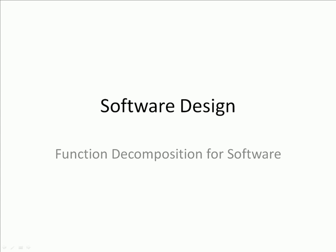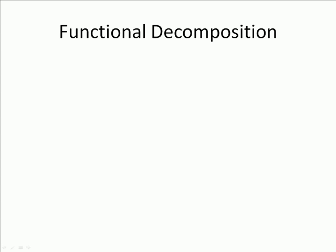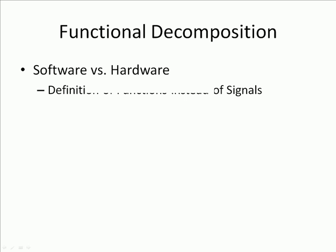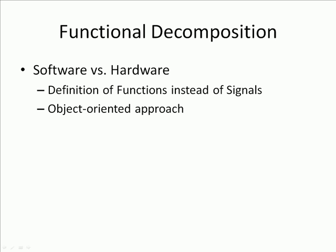Today we're going to be covering the software design aspect of functional decomposition. The main difference we need to focus on is software versus hardware. With hardware you defined what signals went between blocks, but in software we're going to define what functions. There are still signals involved but internally there are only functions. It's a very object-oriented approach where each block has a set of public function interfaces — similar to public functions of a class in Java or subroutines shared from a header file.